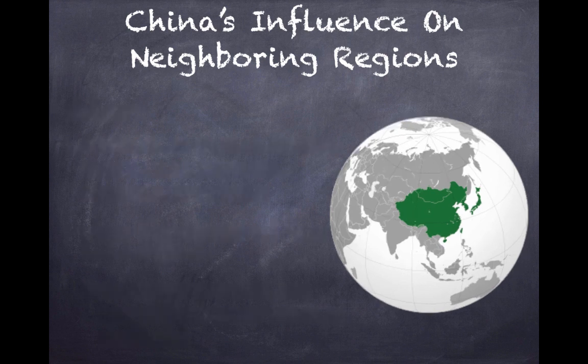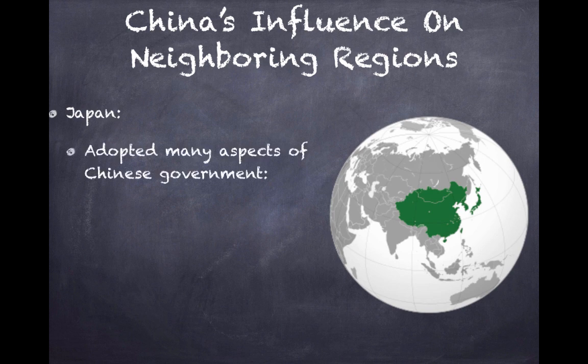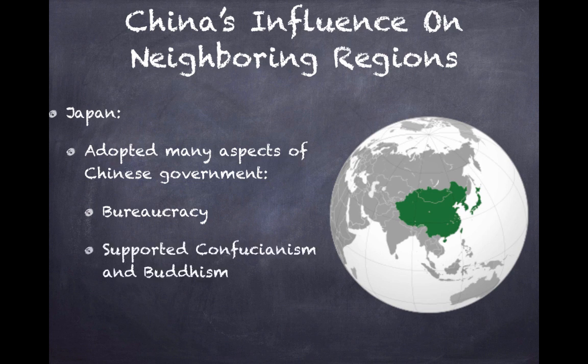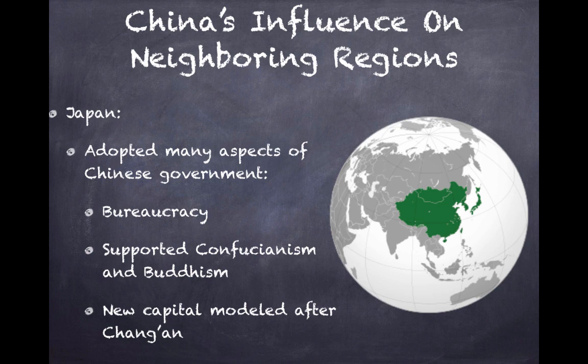The last area of China's influence is Japan. Japan adopted many aspects of Chinese government; however, if you look at the map, Japan is more isolated from China due to water, whereas Vietnam and Korea are connected by land. So Japan was not going to be as connected to China. There was also a government bureaucracy in Japan, and they supported Confucianism and Buddhism. The new capital of Japan was modeled after Chang'an, a very important city in China.